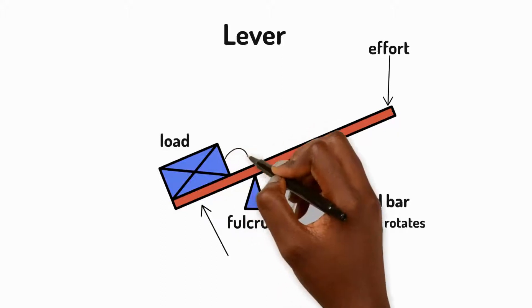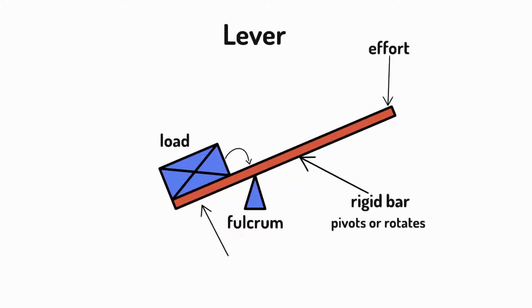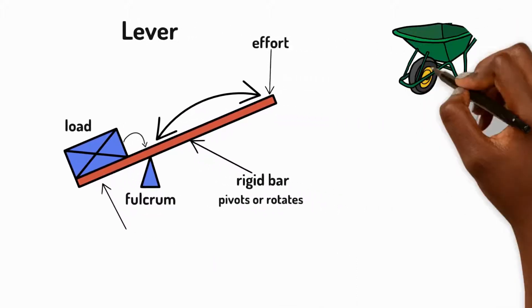For easier lifting with a lever, the load should be closer to the fulcrum and the effort should be applied further away from the fulcrum.